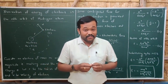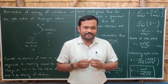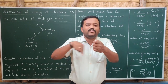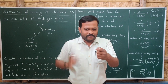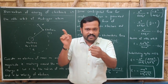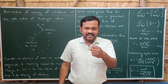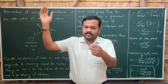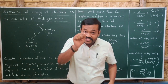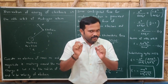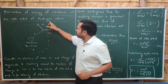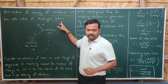Welcome to part four of the chapter 'Atoms.' According to Bohr, electrons revolve around the nucleus in definite orbits — orbits that are fixed around the nucleus in which electrons rotate. These fixed orbits have fixed radius and fixed energy. In this session we will be deriving the expression for energy of the nth orbit of the hydrogen atom.